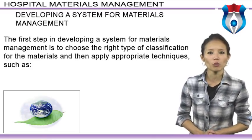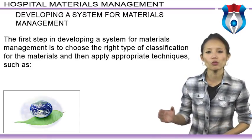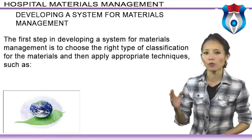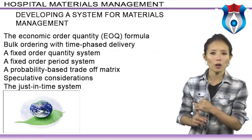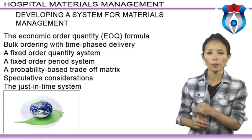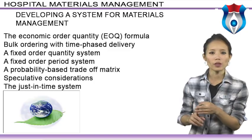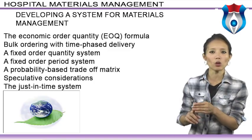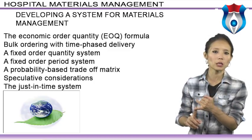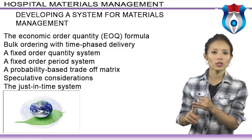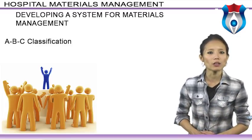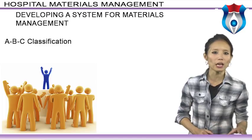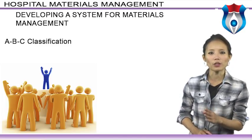The first step in developing a system for materials management is to choose the right type of classification for the material and apply appropriate techniques such as: the Economic Order Quantity (EOQ) formula, bulk ordering with time-phased delivery, a fixed order quantity system, a fixed order period system, a probability-based trade-off matrix, speculative concentration, and the just-in-time system.